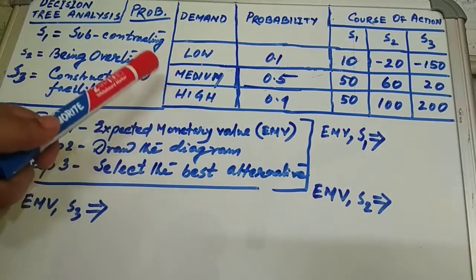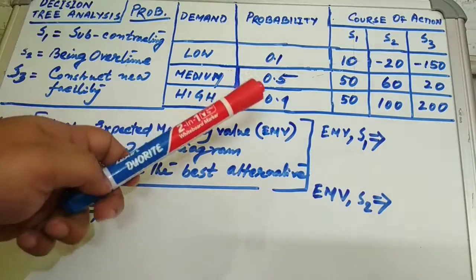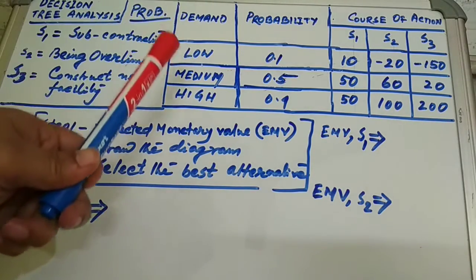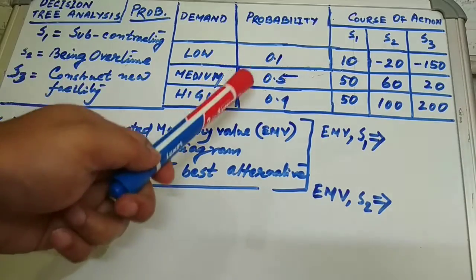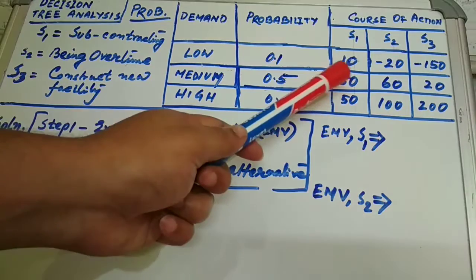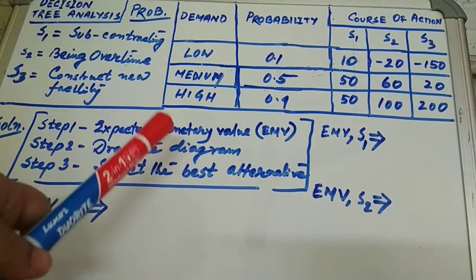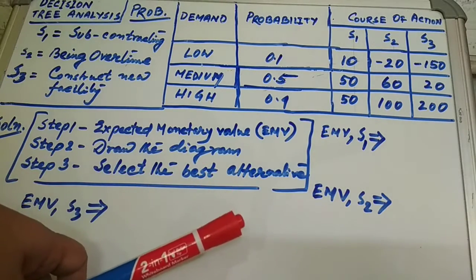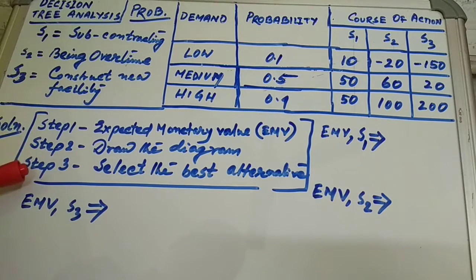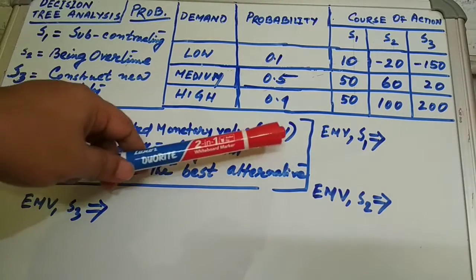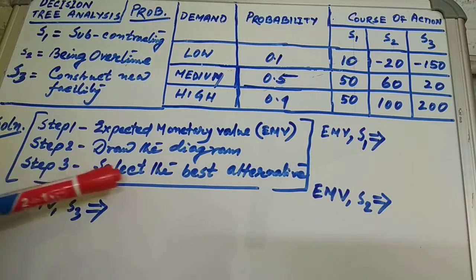We have to make a decision tree and decide which alternative is best suited for that particular glass factory. The demand levels and their corresponding probabilities are given — low, medium, and high — along with the alternative values in the decision matrix. Step one is to find the expected monetary value (EMV), step two is to draw the diagram, and step three is to select the best alternative.